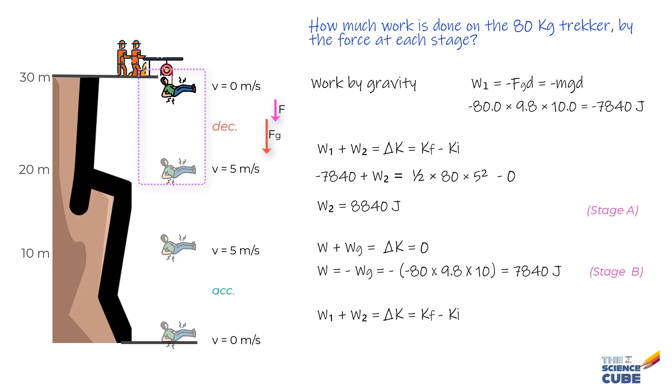Work done by the force of gravity is W₁ equals minus FG into D that is the force of gravity into displacement which equals minus MGD which equals minus 80 into 9.8 into 10 which equals minus 7,840 joules. It does not change because the direction of force continues to be the same and the direction of displacement also continues to remain the same.